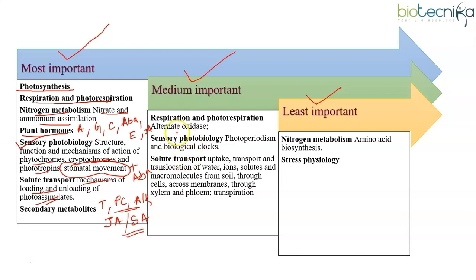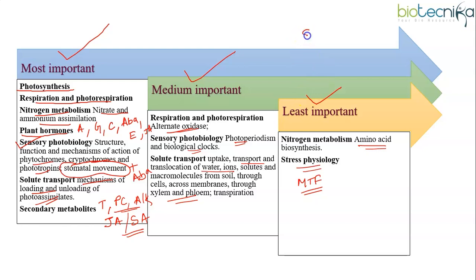Moving on to medium important topics: alternate oxidase is not so important. Photoperiodism and biological clocks — sometimes they ask, sometimes they skip. For solute transport, earlier they used to ask questions on xylem, phloem transportation and translocation of molecules, but nowadays the prime focus is loading and unloading. The least important topics are the amino acid biosynthesis part of nitrogen metabolism and stress physiology — if they ask stress physiology, it could be in the form of match the following based on stress conditions. Overall, questions from Unit 6 can be in any form: statement-based, match the following, or image-based questions.